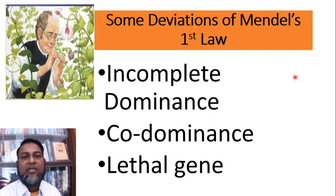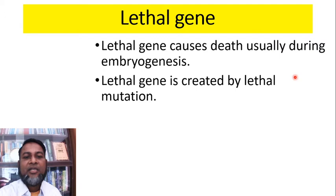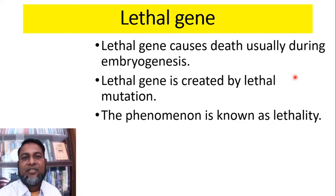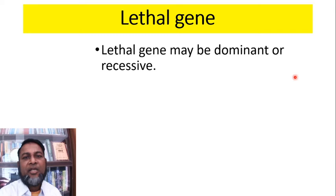Today we discuss Lethal Genes. A lethal gene causes death usually during embryogenesis. It is created by lethal mutation, mutation of a gene, or point mutation. The phenomenon is known as lethality because it causes death of an organism bearing the lethal gene. Huntington's disease in humans is a dominant lethal gene that causes a neurological disorder. Lethal genes may be dominant or recessive.